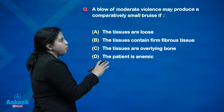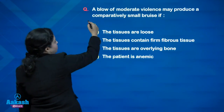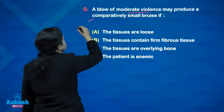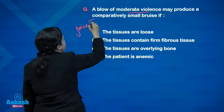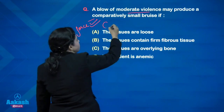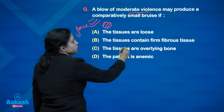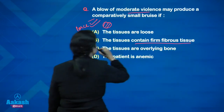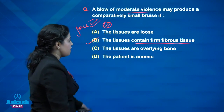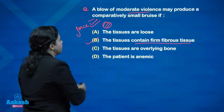A blow of moderate violence may produce a comparatively small bruise — this is a good question. The blow is of moderate violence and the force is truly applied, yet it produces a small bruise. Why? It can be that the tissues contain firm fibrous tissue, and hence the underlying collection of capillary blood is not evident. Tissues being loose or overlying bone or the patient being anemic are not the correct answers here.